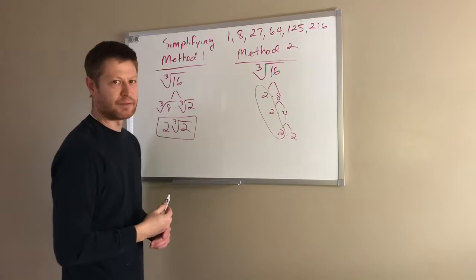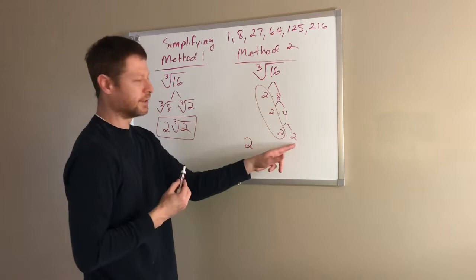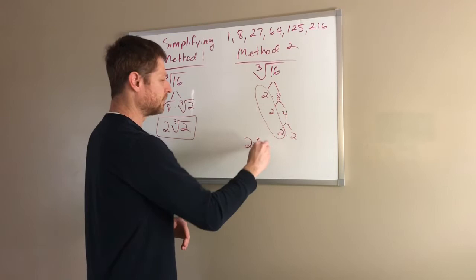So three of those will come out of the cube root as a single 2, and then this is the leftover right here. This 2 here that did not get circled, it didn't have two other ones to pair with it, so now this would be our leftovers and we would get the same answer of 2 cube roots of 2.